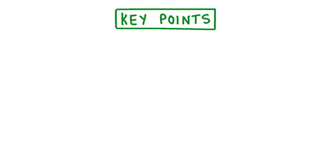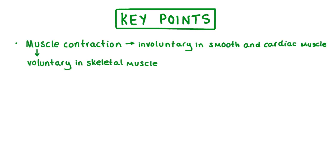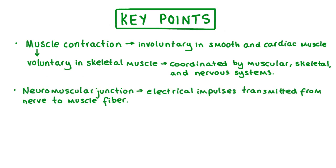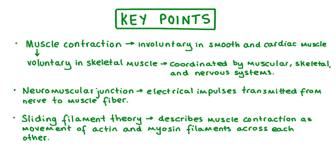To recap: muscle contraction can be voluntary or involuntary. Skeletal muscle contractions are coordinated by the muscular, skeletal, and nervous systems. Electrical impulses are transmitted from a nerve to a muscle fibre at a neuromuscular junction. And the sliding filament theory describes muscle contraction as a result of the interaction of actin and myosin filaments.